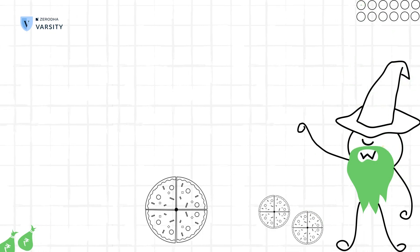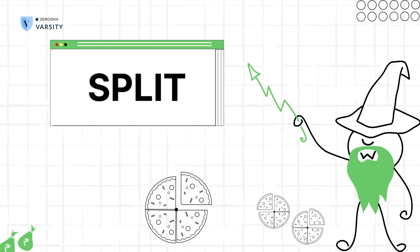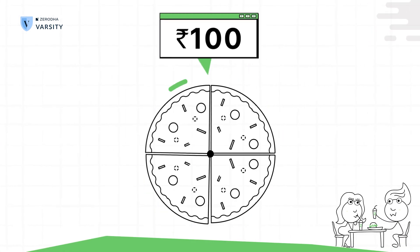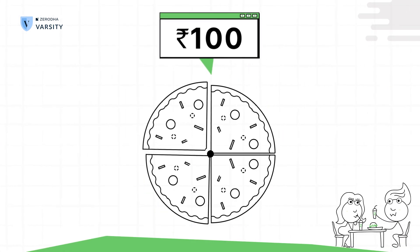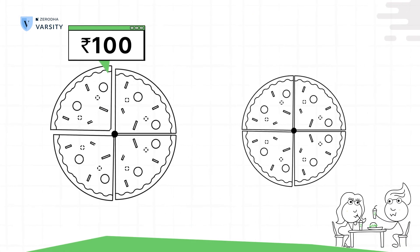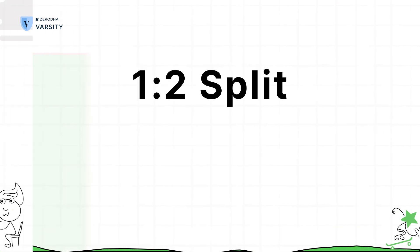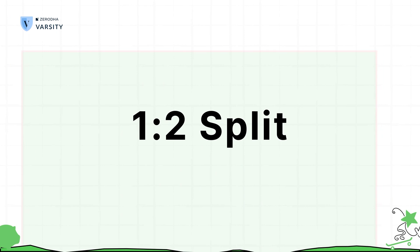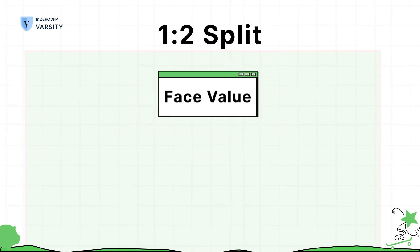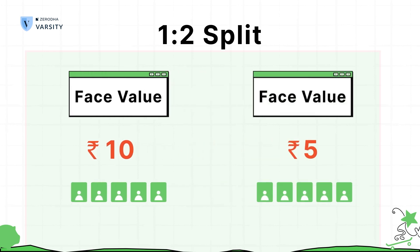The next type of corporate action is a split. In a split, the price of the share decreases and the number of shares in the market increases. It's also done in a ratio. So if there's a 1:2 ratio and the face value of a stock is Rs.10, then that Rs.10 face value stock now becomes Rs.5 and the number of shares outstanding doubles.